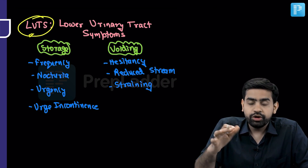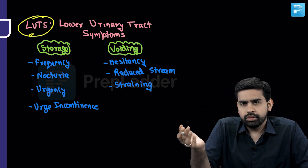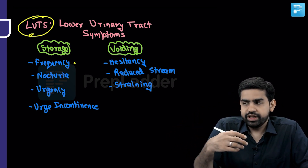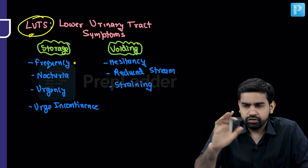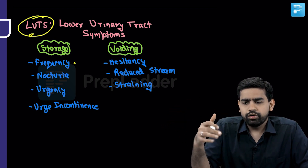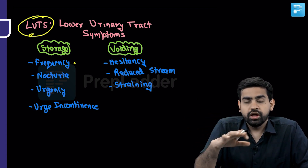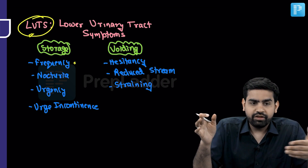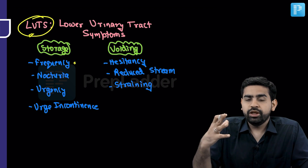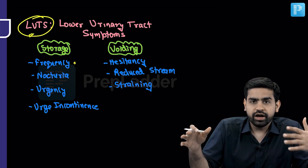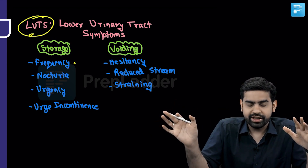Coming to LUTS — lower urinary tract symptoms. They can be either storage symptoms or voiding symptoms. Storage symptoms include frequency — the patient has to go again and again to the washroom. Normally we wait around two and a half to three hours. If the patient has to go every 15 minutes, they are probably in overflow dribbling. If going every one to one and a half hours, it's probably BPH or bladder outlet obstruction.